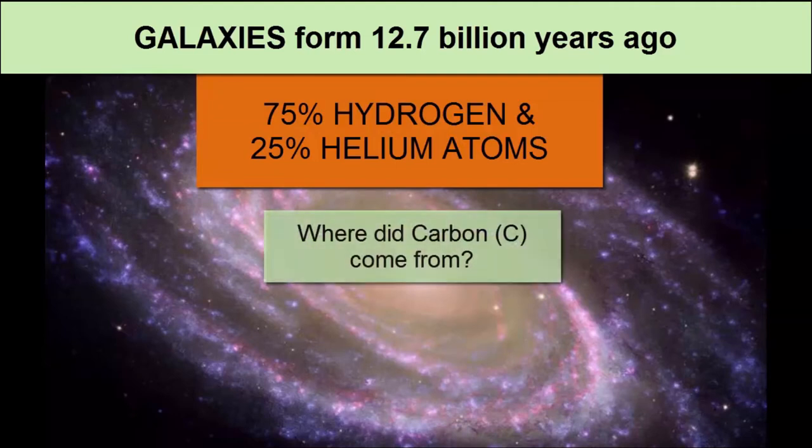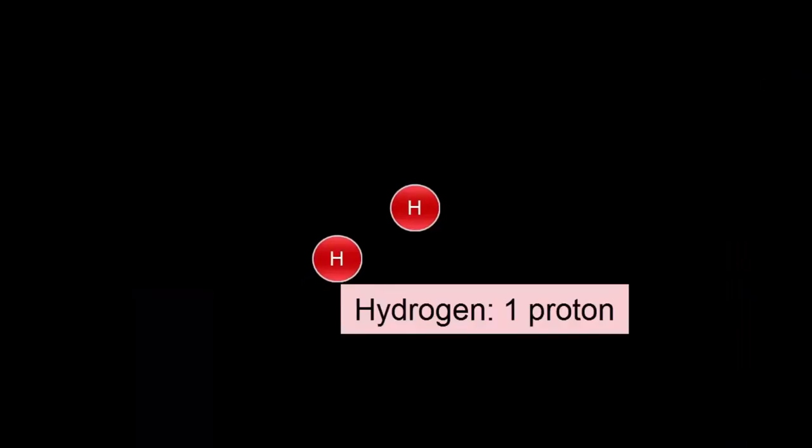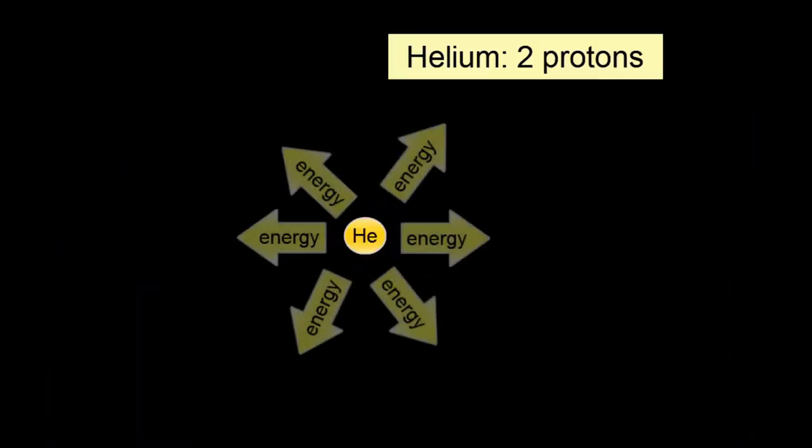What about rocky planets? And what about the atoms other than hydrogen? Where did they come from? Let's return to the nuclear fusion going on inside a star's core. At first, the major fuel is hydrogen, which fuses to become helium.